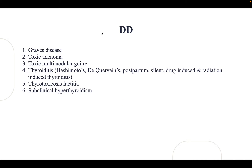For the differential diagnosis, we have Graves' disease, toxic adenoma, toxic multinodular goiter, and thyroiditis — including Hashimoto's, de Quervain's, postpartum, silent, drug-induced, and radiation-induced thyroiditis. We also have thyrotoxicosis factitia and subclinical hyperthyroidism.